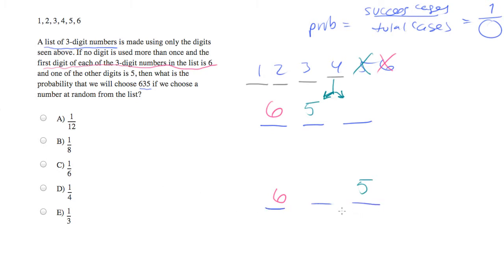Those are the two scenarios for dealing with the 5. And for each one of those, there are four options for the remaining number. And I'll actually fill them in. We could do 1, 2, 3, or 4.